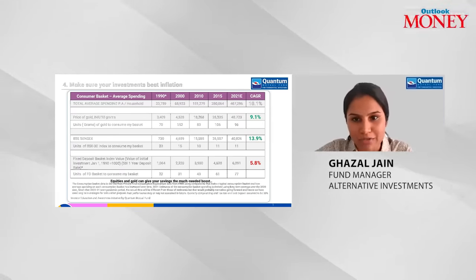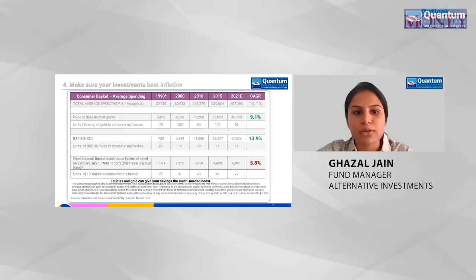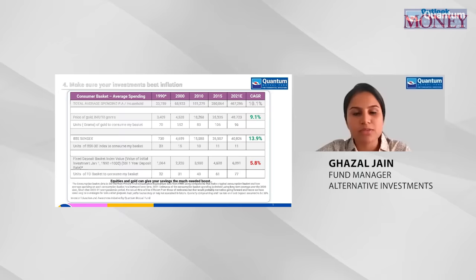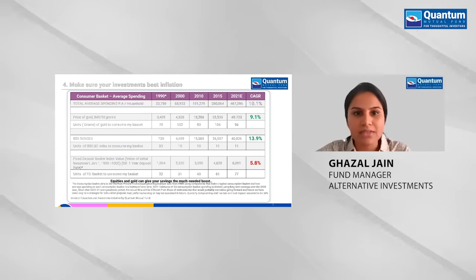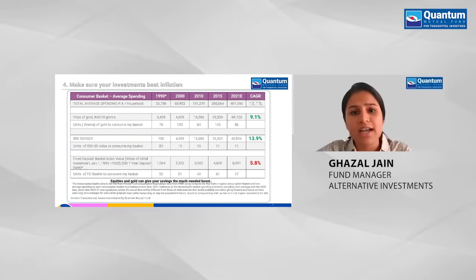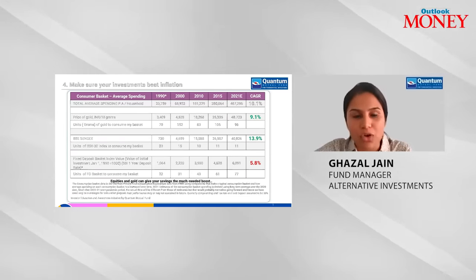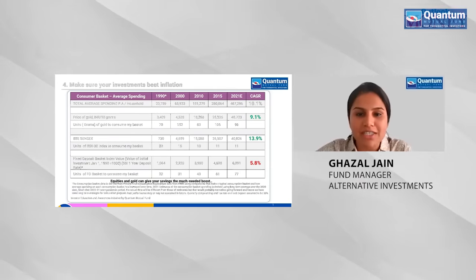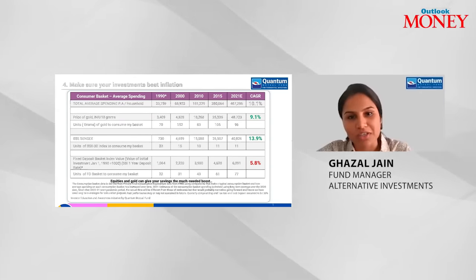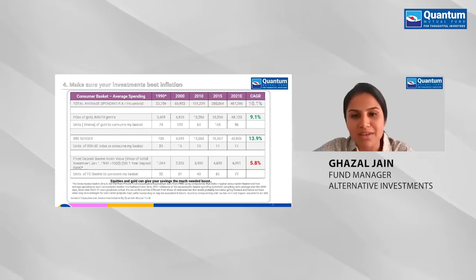In contrast, equities manage to beat inflation, and gold more or less keeps in line with inflation. This is not to say bank fixed deposits should be shunned, but for long-term investment goals you must factor in inflation and have exposure to asset classes that can help you beat inflation and preserve your purchasing power. The whole essence of saving and investing is to have enough money to meet all your life's goals — if you're saving in an avenue that doesn't beat inflation, the whole purpose is not being met.